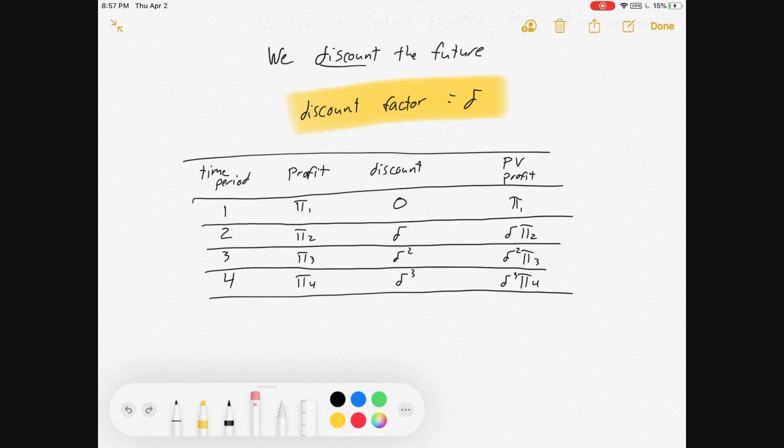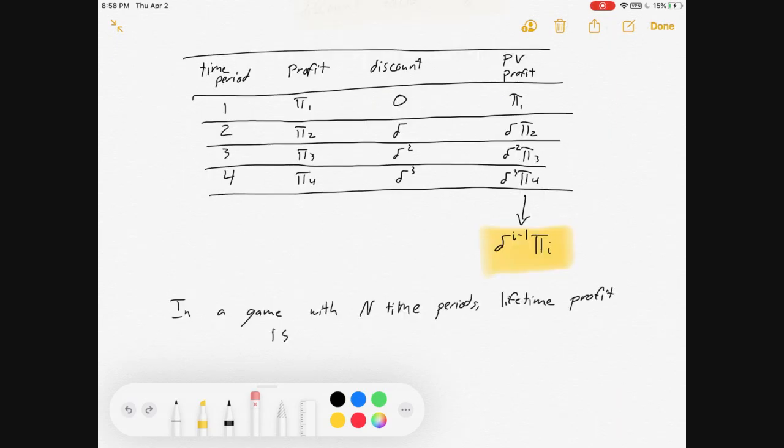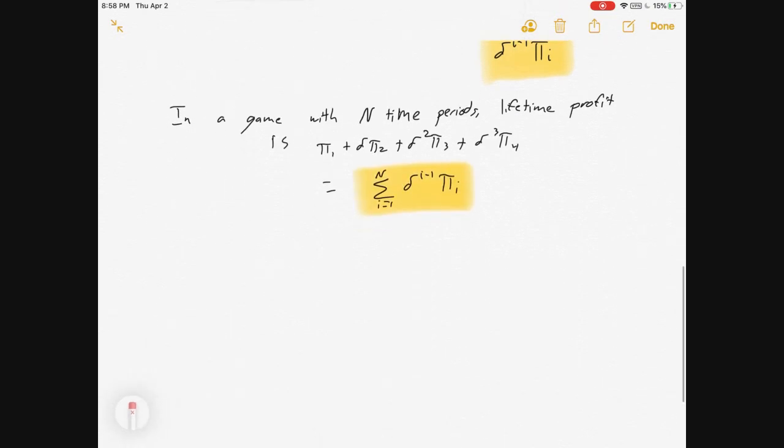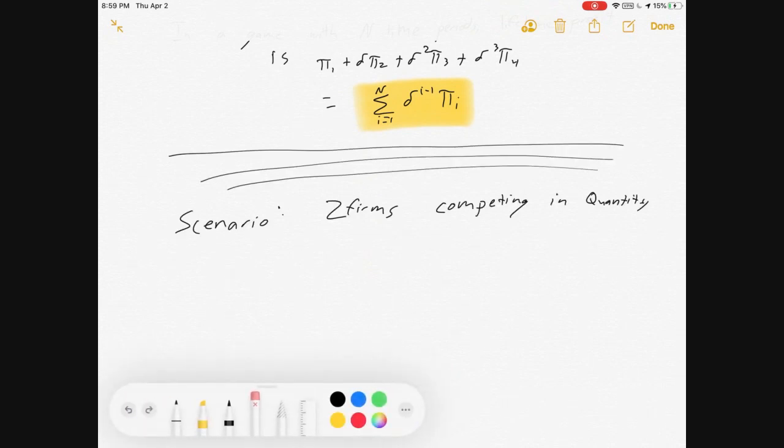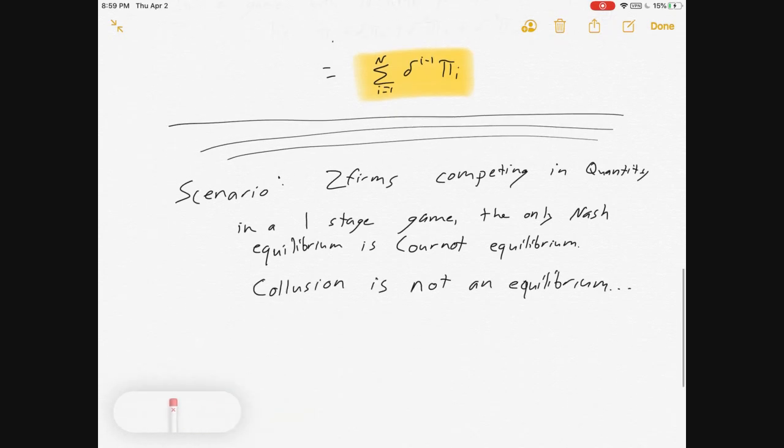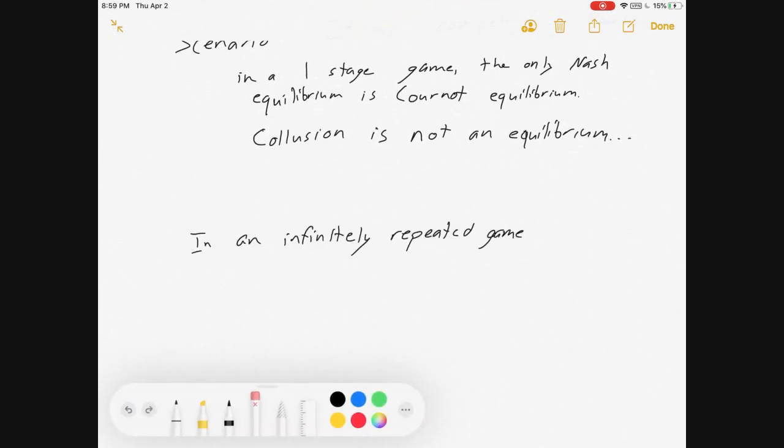The point was that in a one-stage game between two firms competing in quantity, the only equilibrium is Cournot. But if we let our firms repeat their interactions over and over, it might be possible for them to sustain collusion as a separate equilibrium. In order for that to happen, we have to have these multiple time periods and something called a Grim Trigger Strategy.